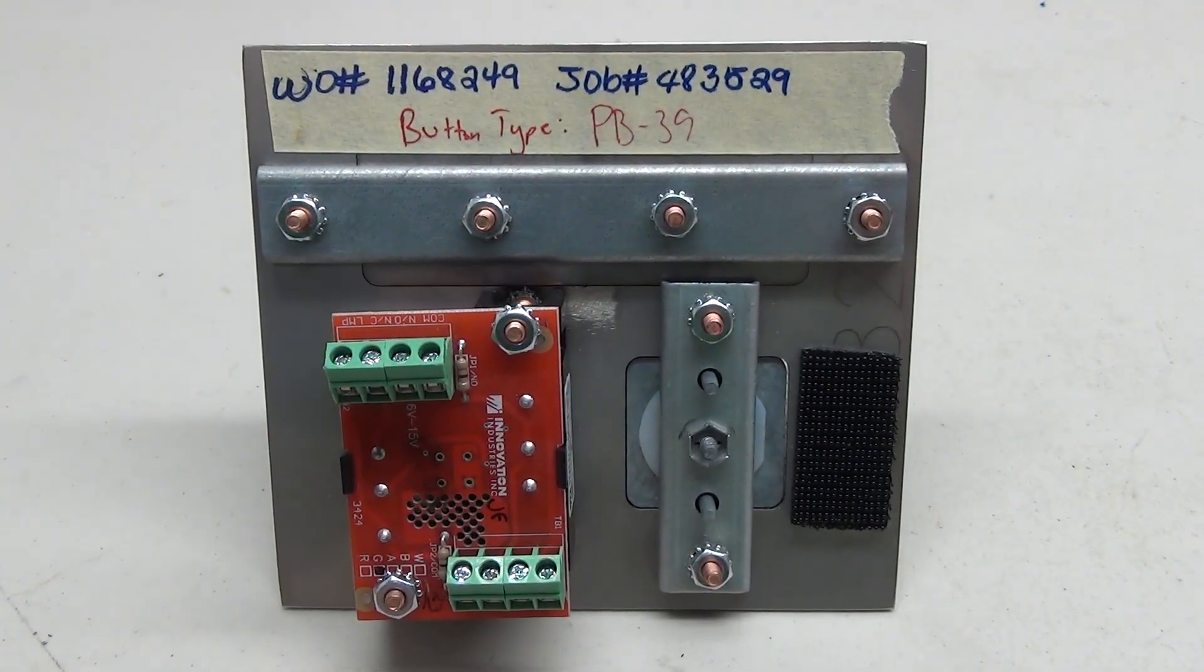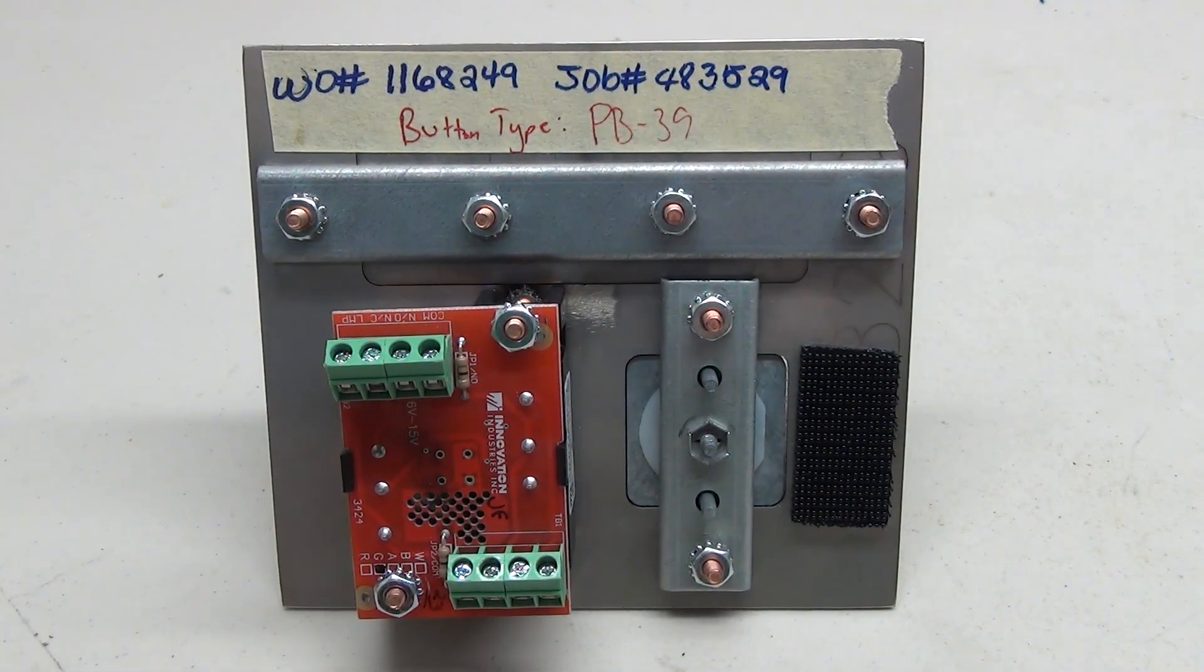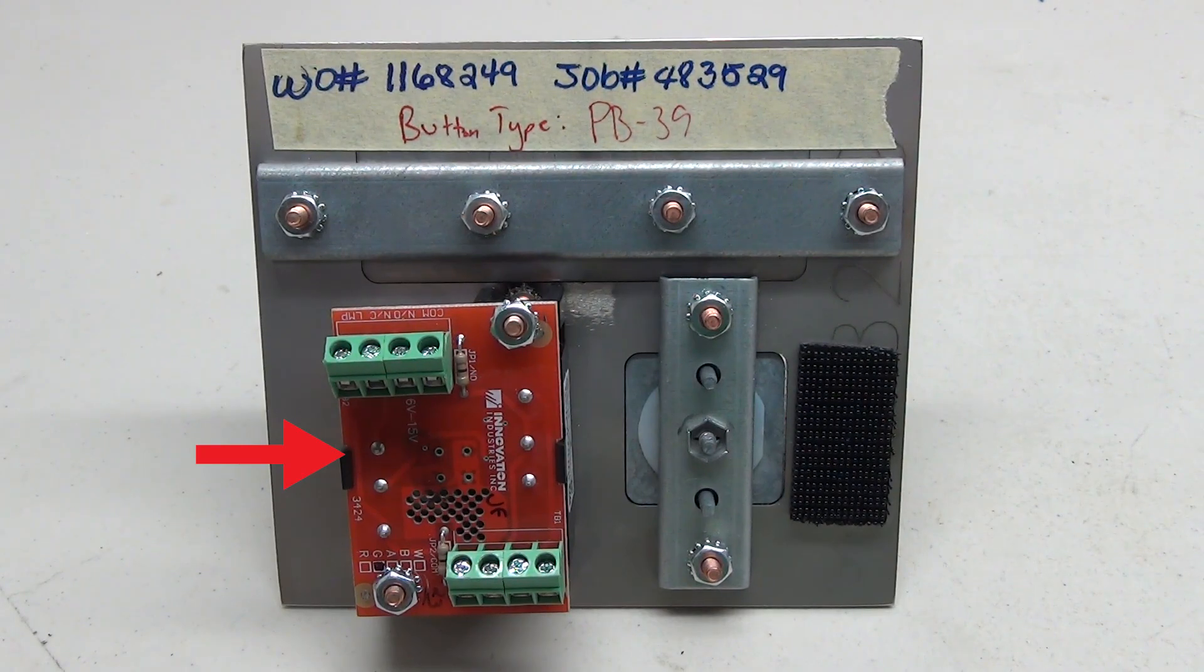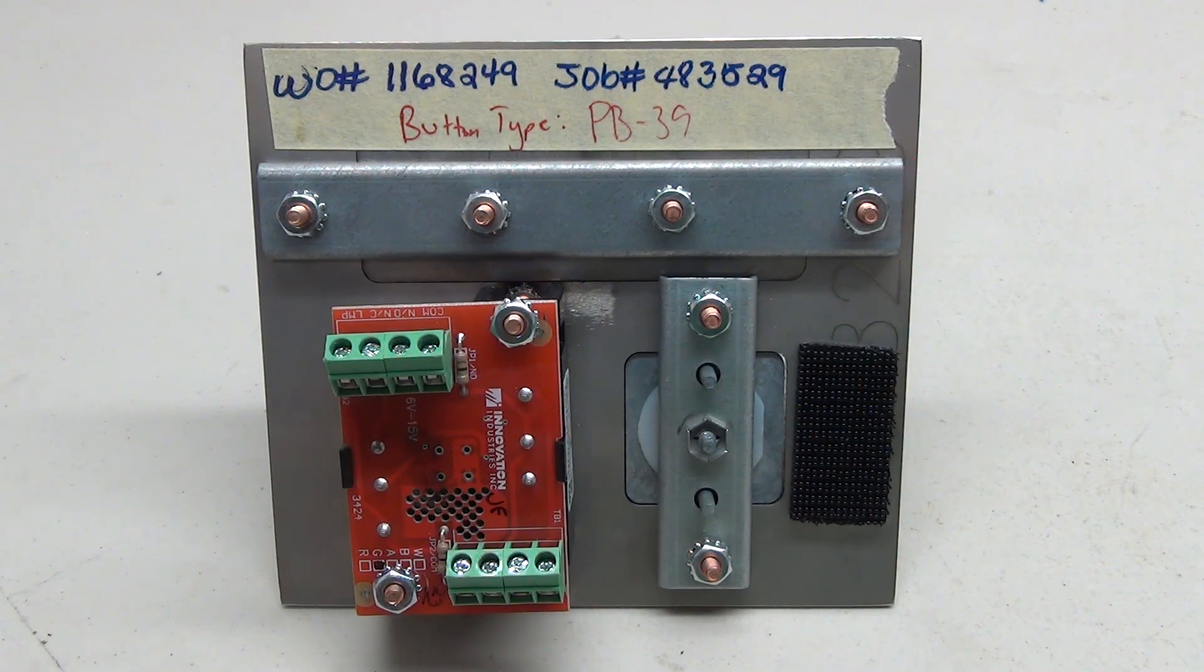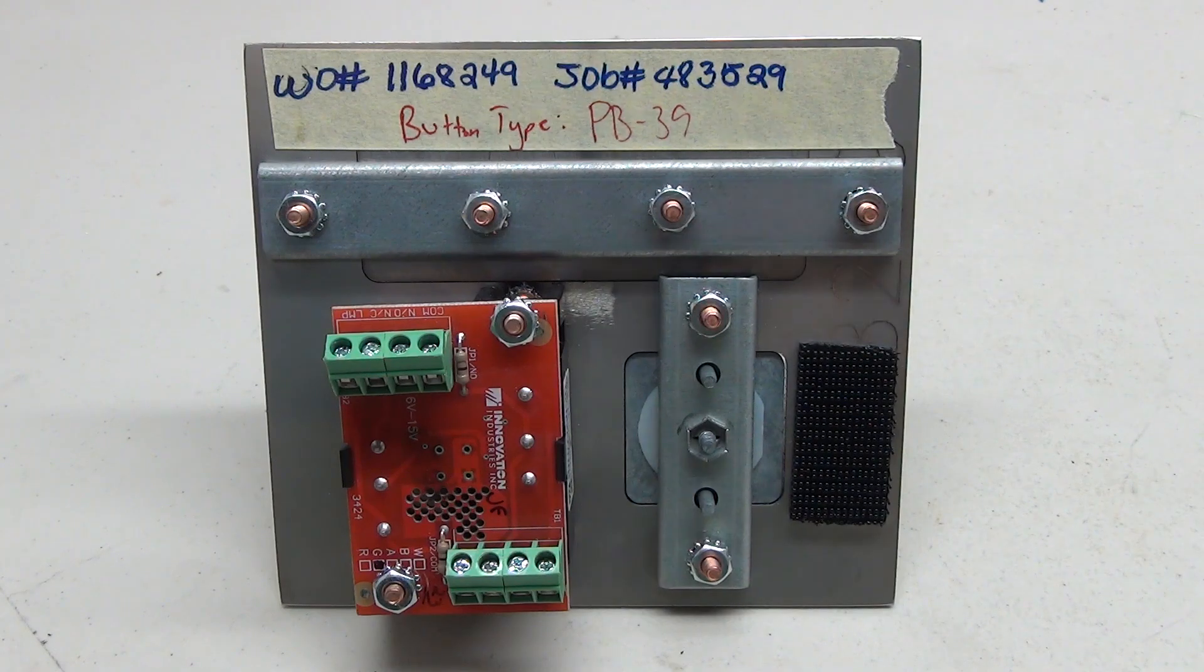Turning this thing around we can take a look at what actually makes up the button. You can see on the left there's a circuit board and then we have the two brackets which hold the Braille and logo in place. It's actually a pretty simple button.